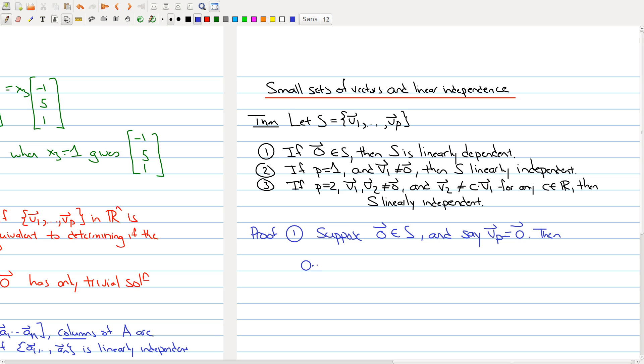Then notice that we can take zero times the first vector plus zero times the second vector all the way up to zero times the second last vector, and then I can take one times the last vector. All of these vectors are zero because I'm multiplying them by zero, and this vector here, when I multiply it by one, is the zero vector. So I'm adding up a bunch of zero vectors and I get equals to zero. But what we see is the weights aren't all zero. So I have a non-trivial solution, so S is linearly dependent.